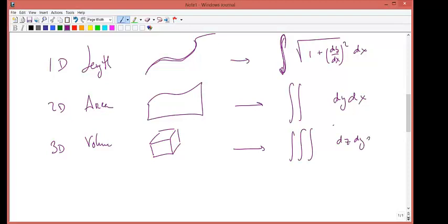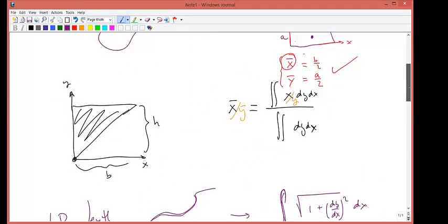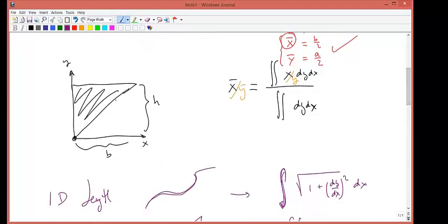dz, dy, dx. This works in Cartesian, this will work in polar, spherical, any coordinate system. So that's the idea. For us, if they're asking us for the centroid of an area, then naturally we have to have a double integral.